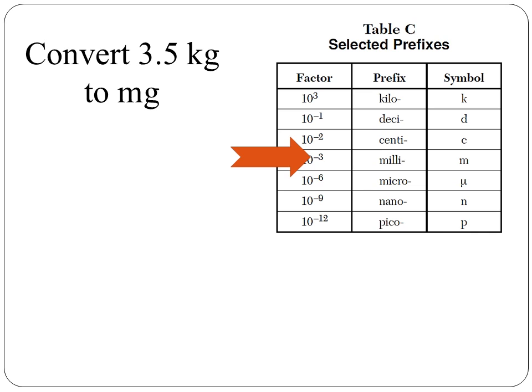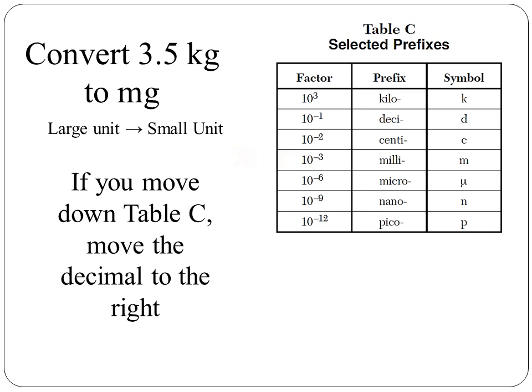Now, we are going from a larger unit to a smaller unit in this conversion. So the number part of the measurement needs to go from a smaller number to a larger number. So if you are moving down reference table C from a large unit to a small unit, you move the decimal point to the right to make the conversion.